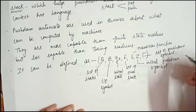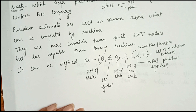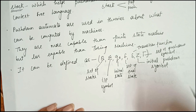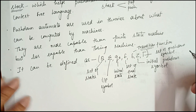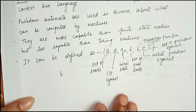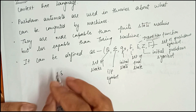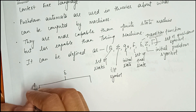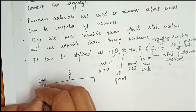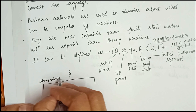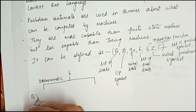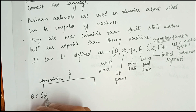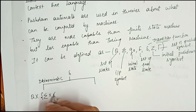Γ is the set of pushdown symbols that can be pushed or popped from the stack. The transition function δ can be defined in two ways. If the PDA is deterministic, then the transition function is defined one way; if the PDA is non-deterministic, it is defined another way. For a deterministic PDA, the transition function is: δ: Q × (Σ ∪ {ε}) × Γ → Q × Γ*.